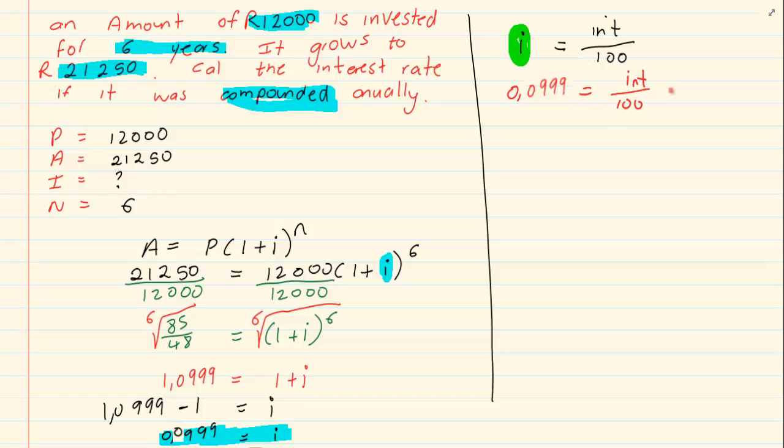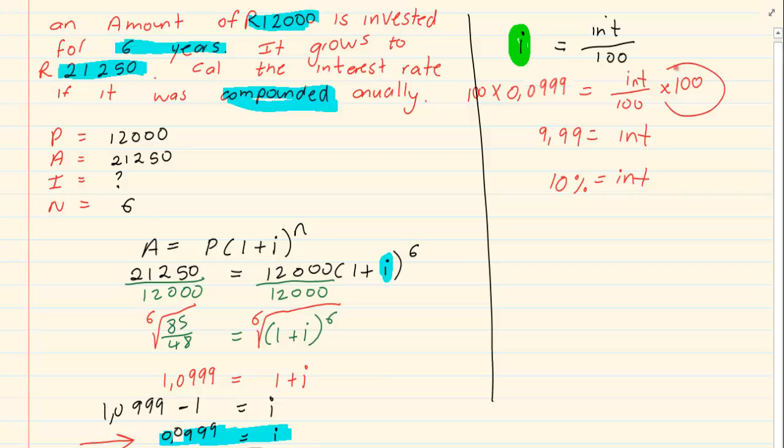Now, to get rid of the 100 we are going to multiply by 100, and what you do on one side you do on the other. So, our interest rate is actually 9.99. Rounded off we have an interest rate of 10%. Now, usually most children stop at this stage, but you must remember that your answer must be multiplied by 100 to get the correct interest rate.